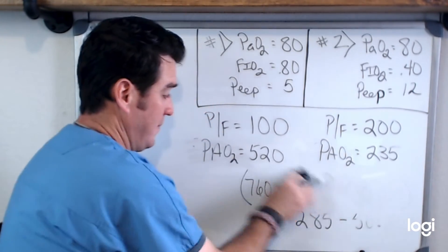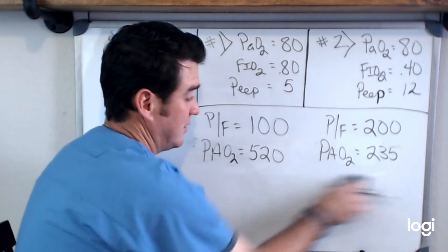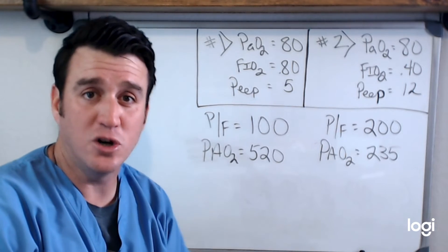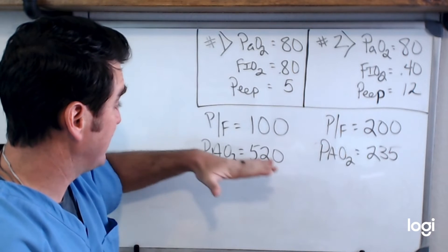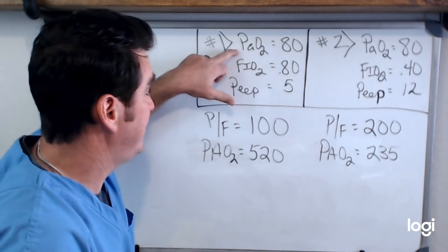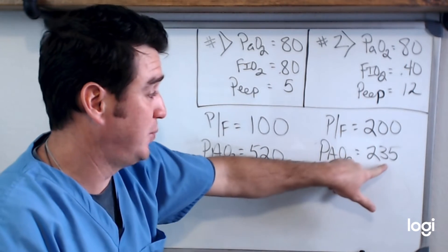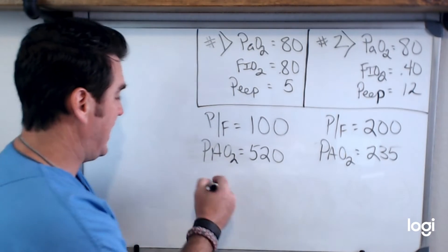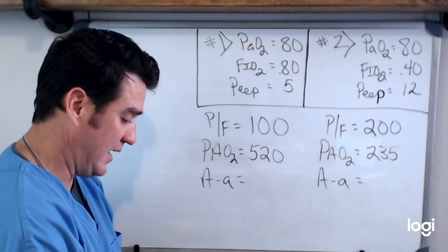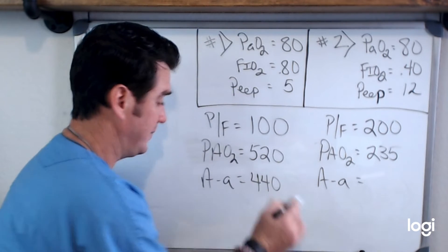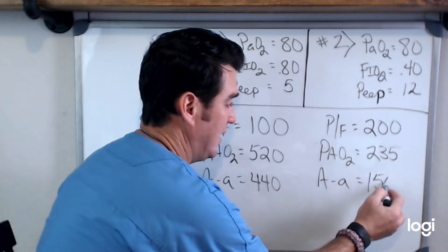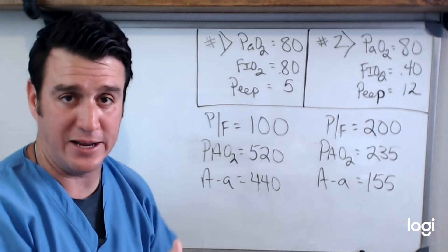Bear with me because this is all going to start coming together. The first thing you should notice is that both patients have a PaO2 of 80 — they're equivalent at the arterial level. But look what's different at the alveolar level. You are having to put in 520 mmHg of alveolar partial pressure of oxygen to achieve an arterial oxygenation of 80. Over here, we only have to put in 235 to get 80. Now, if we do our A-a difference, that's what I'm going to illustrate next.